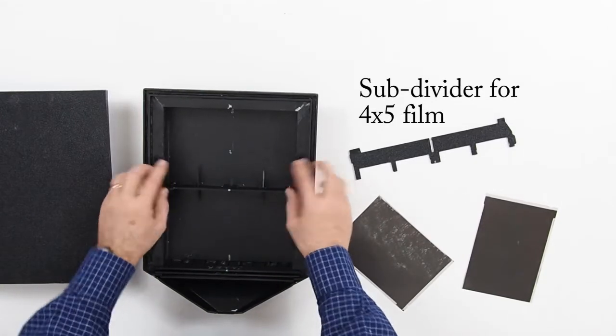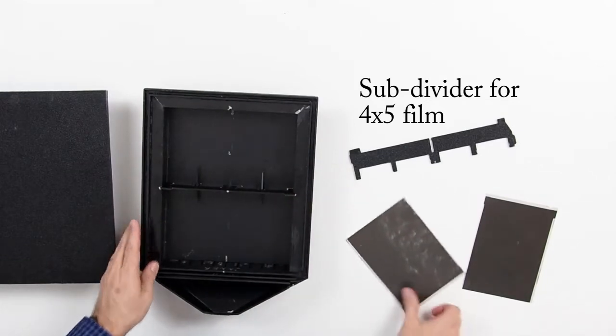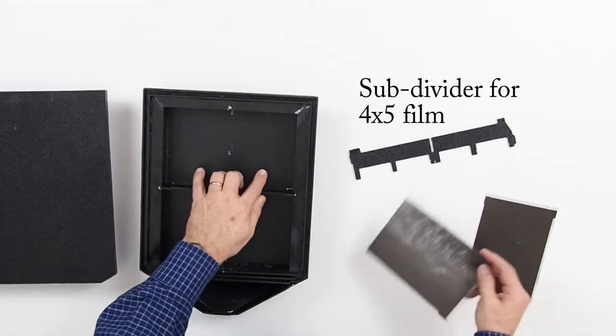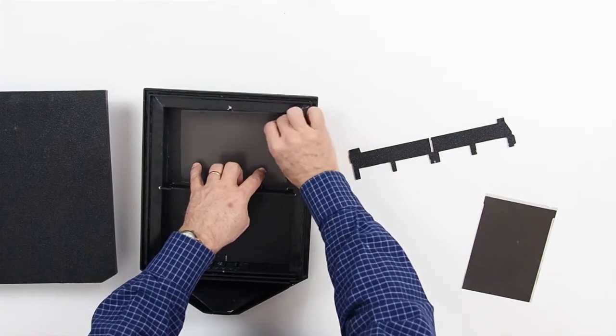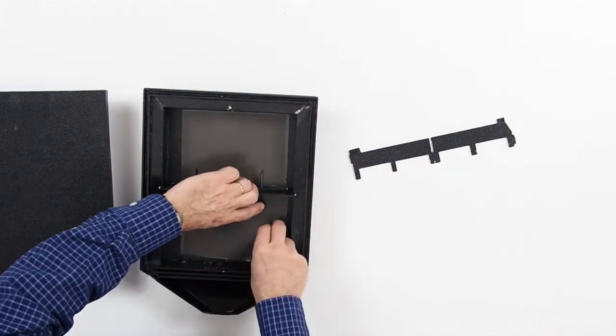You can insert that in place, and then to load the tray, just locate the end of those tabs with one set of fingers and slide the film in underneath. That works pretty well.